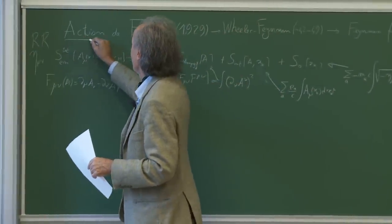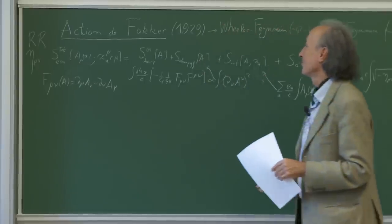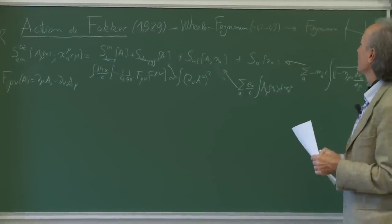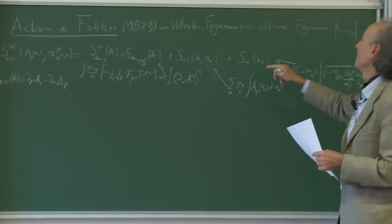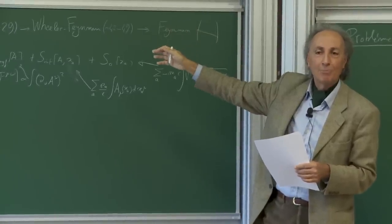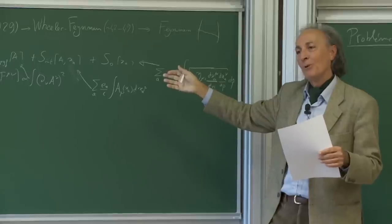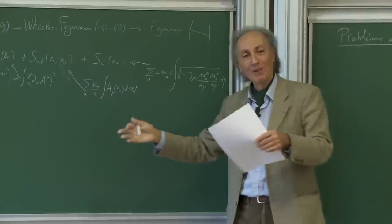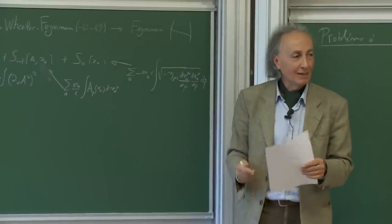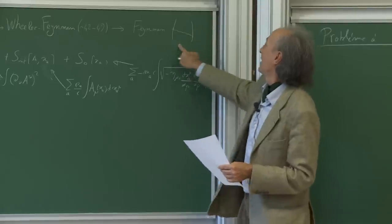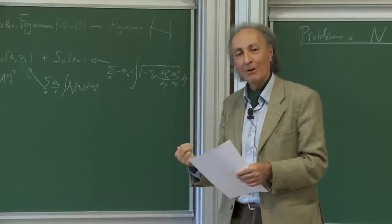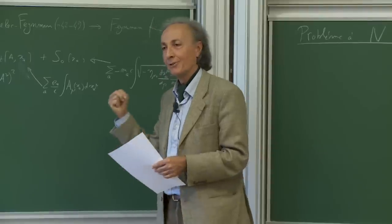Wheeler et Feynman citent entre autres ce travail fondamental de Fokker de 1929, et je vais expliquer ce qu'est l'action de Fokker, reprise par Wheeler et Feynman dans des travaux que Feynman a commencés — c'était le début de sa thèse vers 1942 à Princeton. La publication, à cause des événements de 1944-1945 qui ont occupé Wheeler et Feynman à d'autres choses, n'a été faite qu'en 1949. C'est au cours de ce travail que Feynman a pensé à décrire l'interaction par un petit dessin, et je vais expliquer à quoi correspond ce dessin techniquement dans le calcul de Fokker et dans le calcul gravitationnel.